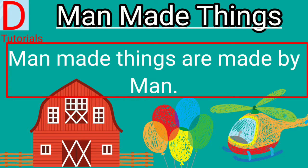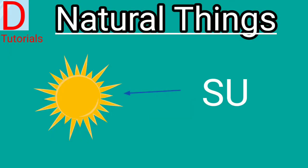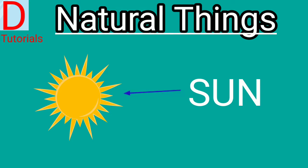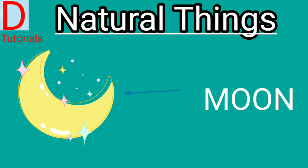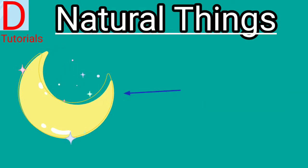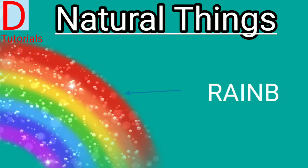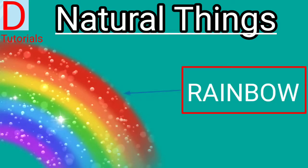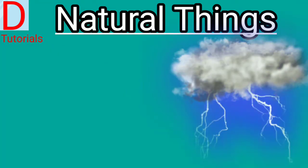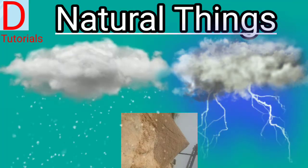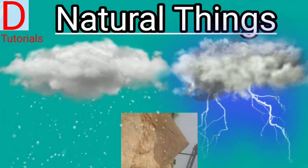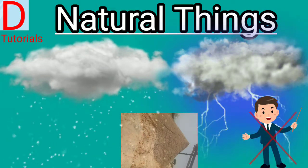Answer me Kids, what is this? Sun — S-U-N — Sun. Yes, it is the sun. And now it is the moon — M-O-O-N. This is a rock — R-O-C-K. Rainbow — my favorite rainbow! Yes, and this one is cloud, water, sand and rain. All of these are natural things, and nature has created all. There is no human interference.